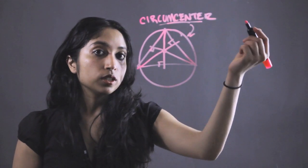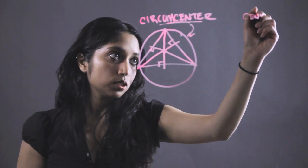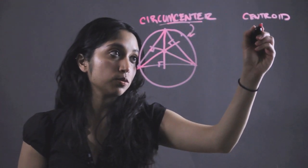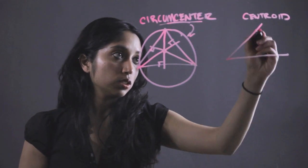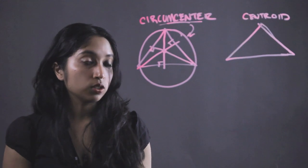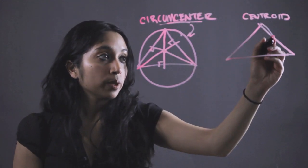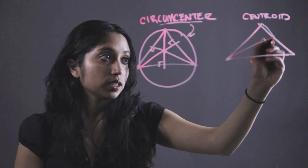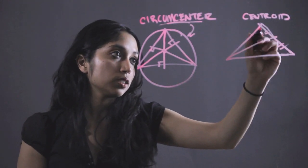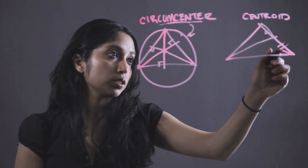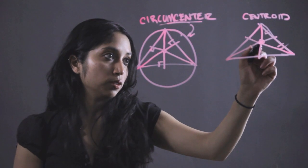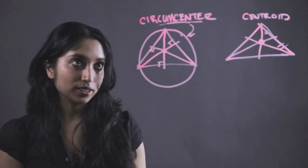Second thing we're going to go over is how to find the centroid. So say we have some triangle. The centroid of this triangle is just going to be where all three medians of this triangle intersect. And a median is just something that divides a side into two equal parts. That's exactly where our centroid is.